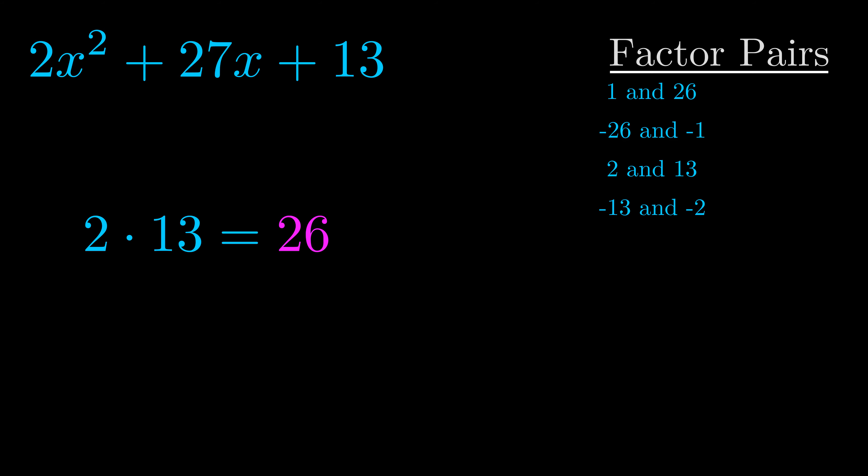Now once you have these factor pairs, the goal is to find which of these pairs adds to the b value.